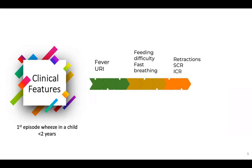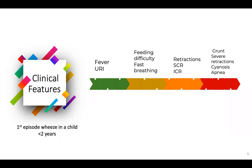If the disease progresses further, there may be intercostal and subcostal retractions. In very severe cases, babies can have grunting, severe retractions, cyanosis, and even apnea. This is the clinical spectrum of bronchiolitis — it can vary from mild to very severe.